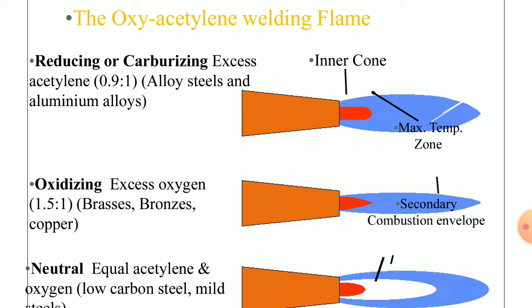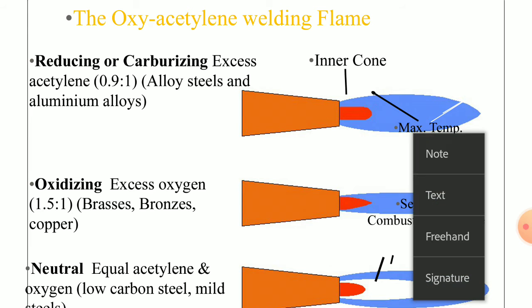The oxidizing flame has oxygen supplied in excess at a ratio of 1.5 to 1, and is generally used to weld brasses, bronze, copper, and similar materials. The interior cone is quite conical in shape, whereas the secondary or outer zone is in sky blue color. This type of flame is a little more sharp compared with the other two types of flames.